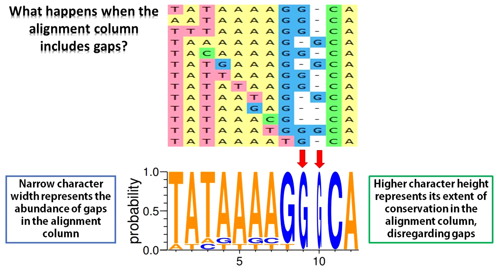So we learn that in this logo representation both height and width of a character are meaningful. On one hand, higher character height reflects the probability of finding the character in the alignment column. This is calculated disregarding the gaps. On the other hand, narrow character width represents higher abundance of gaps in that alignment column. This is the logo representation of an alignment.